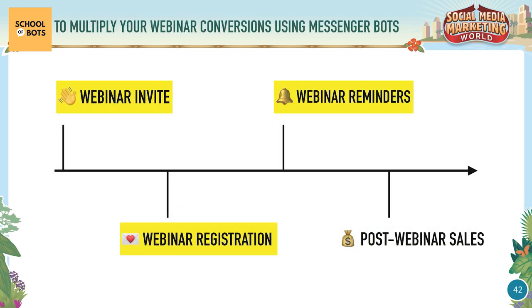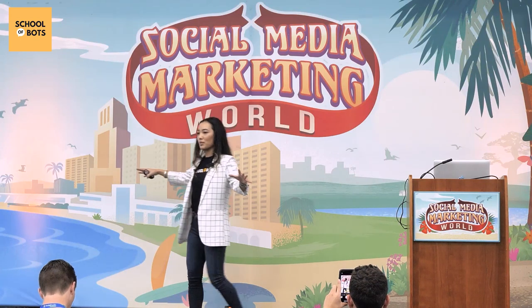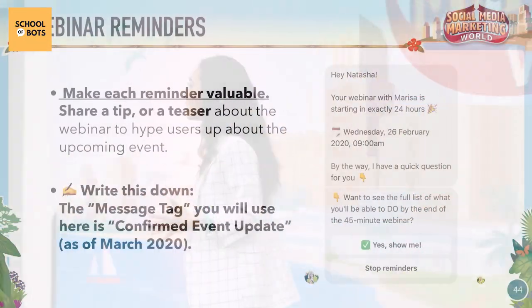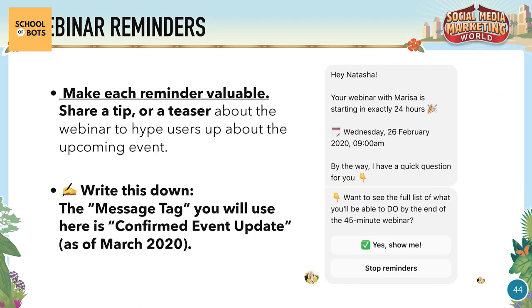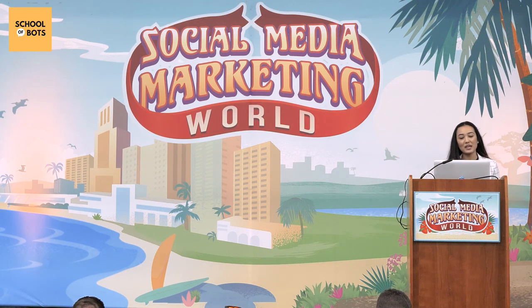Step three is webinar reminders. One of the most important things, regardless of the medium — chat, email, or SMS — is to make each reminder valuable. A lot of webinar emails just say 'your webinar starts in 10 hours' with nothing else, and that's a missed opportunity. The chatbot gives you the perfect medium to do more: share a tip about the webinar topic, share a teaser, even a short video, GIF, or audio — anything creative that hypes people up about the upcoming event.